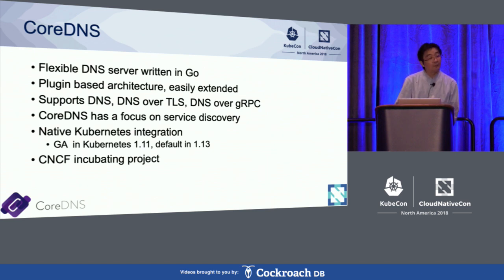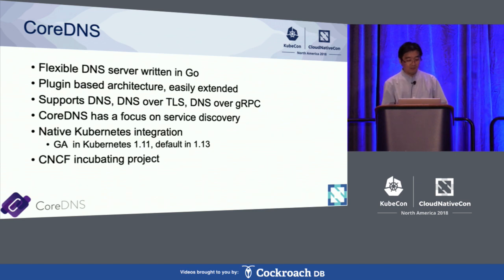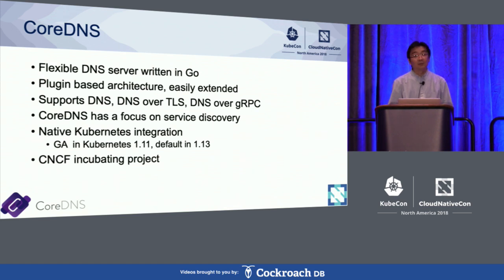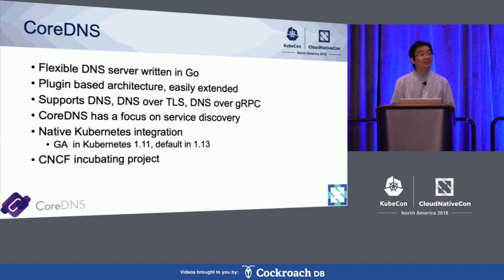CoreDNS has a focus on service discovery. In fact, we have a native Kubernetes integration. We reached GA in Kubernetes 1.11, and we reached the default in 1.13. So if you are using Kubernetes now, you're probably going to use CoreDNS.